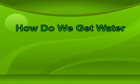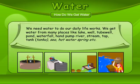How do we get water? We need water to do our daily life works. We get water from many places like lakes, wells, tube wells, ponds, waterfalls, hand pumps, rivers, streams, taps, tanks, seas, hot water springs, and so on.